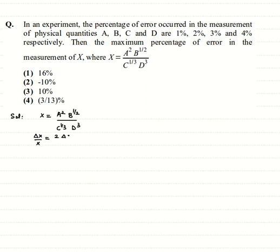2 times the relative error in A plus 1/2 the relative error in B plus 1/3 the relative error in C plus 3 times the relative error in D. So when we have to find out percentage error, that's what's asked in X, what we have to do is multiply the relative errors by 100.